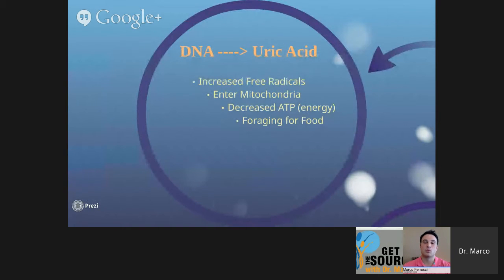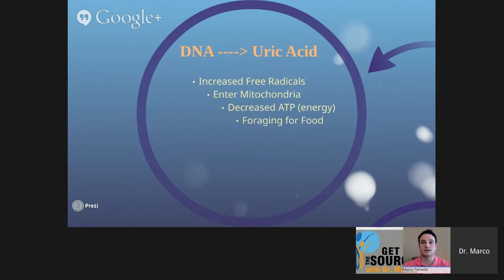The first thing we want to understand is how DNA is related to fructose. When you have high fructose in your body, your DNA breaks down into uric acid. If we have too much uric acid, a lot of things can go wrong — one very common result is gout, where you get breakdown of the joints due to uric acid buildup. But another thing is it starts to increase free radicals in your body. Free radicals are unstable bonds that attack other stable bonds and break them down, and many doctors believe this is the reason we go through the aging process.